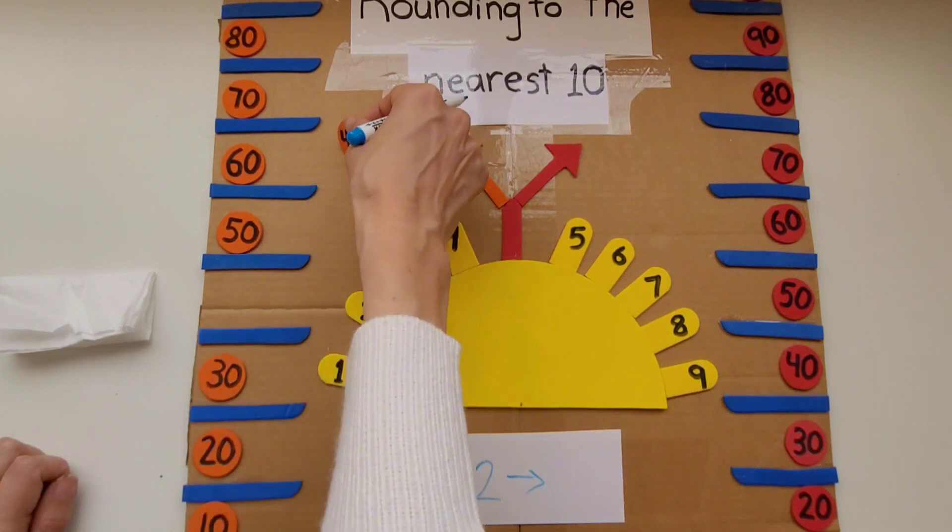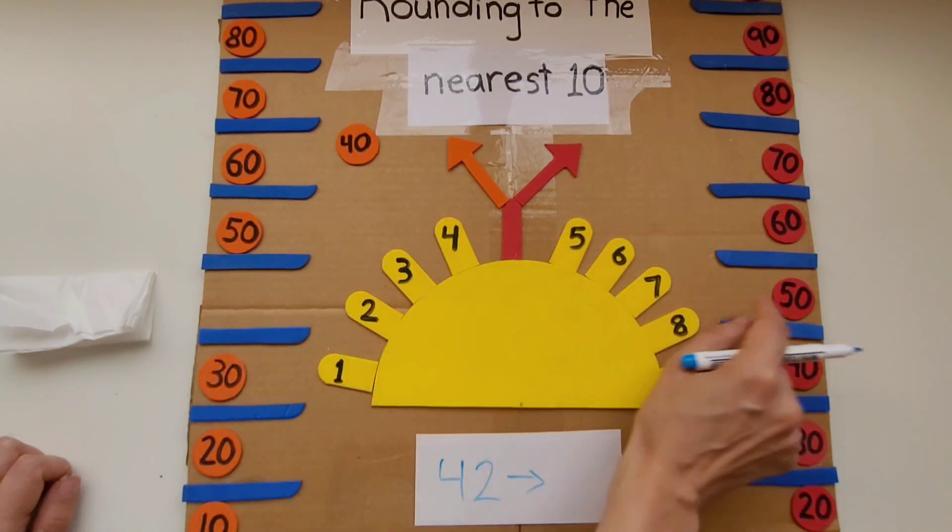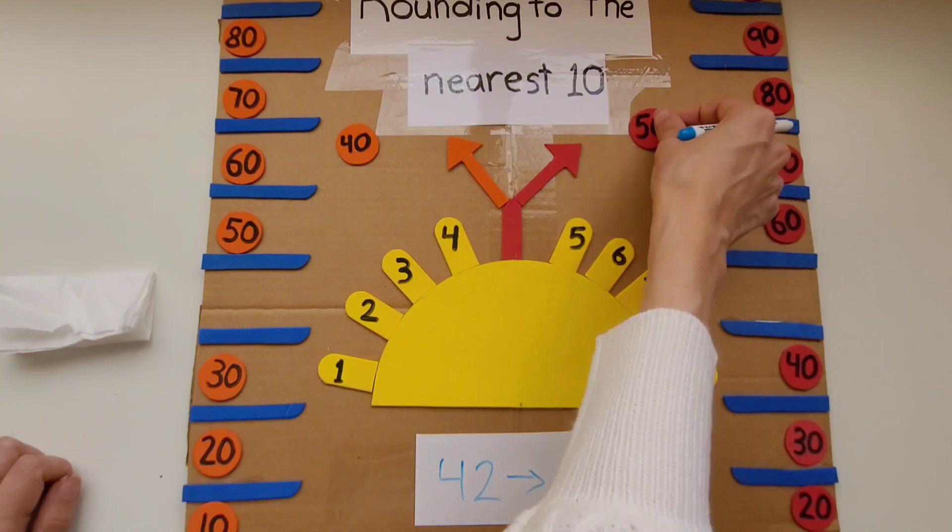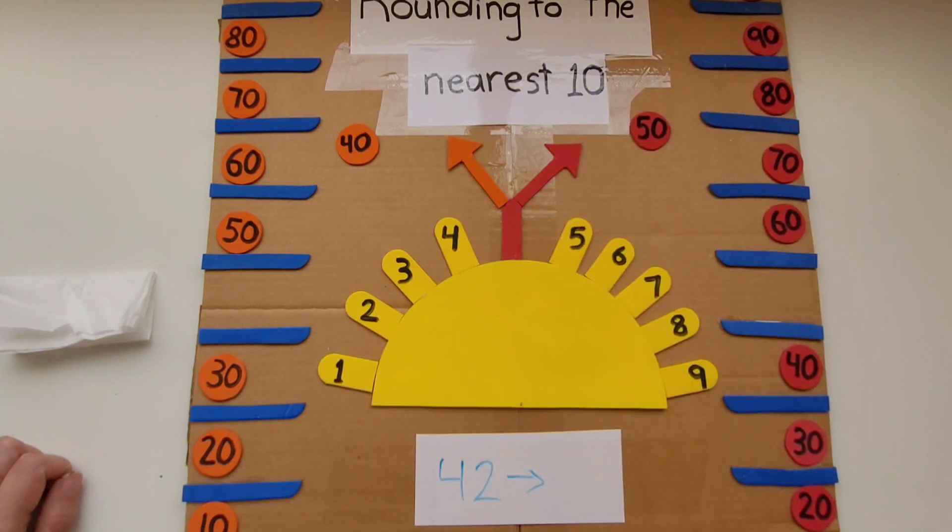First we're going to find the tens. We have a 40 so we're going to take a 40 and across the board we have a 50. So 40 and across the board is a 50.